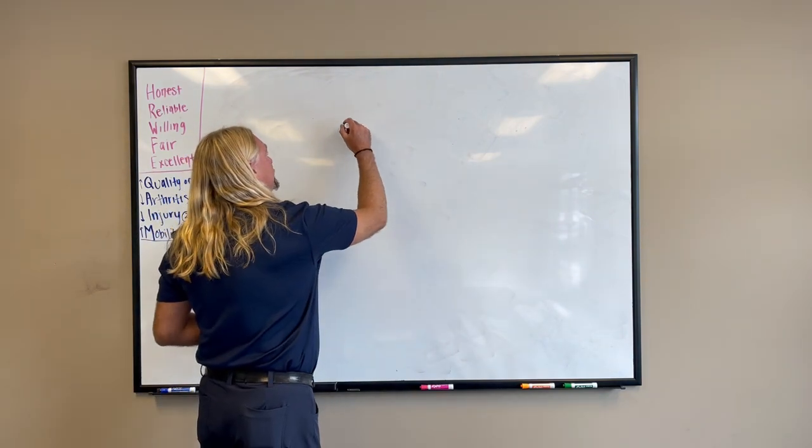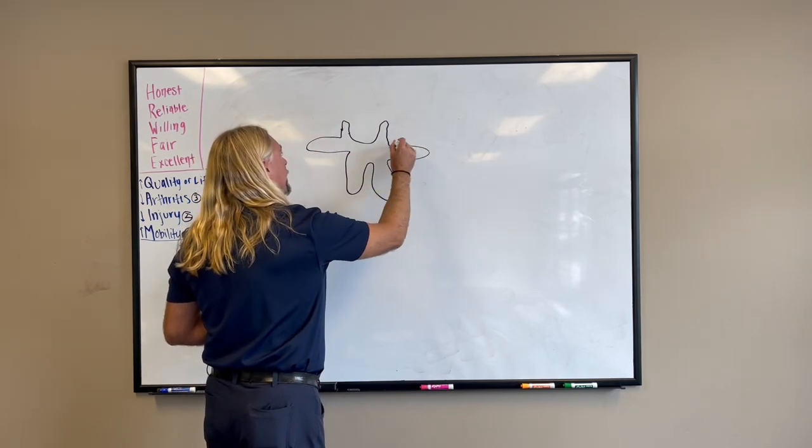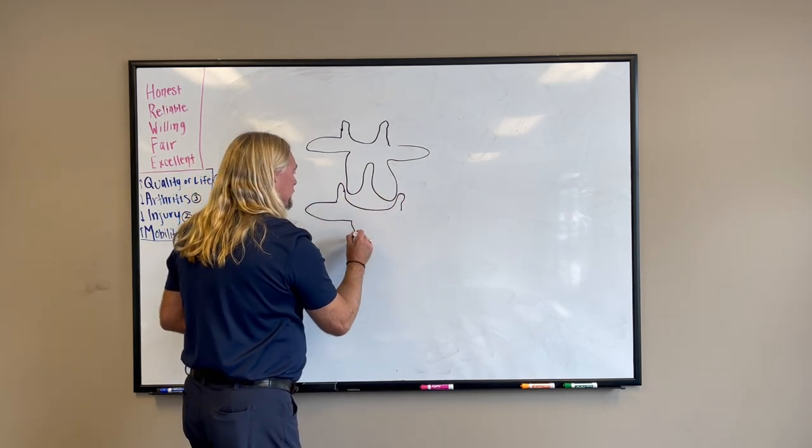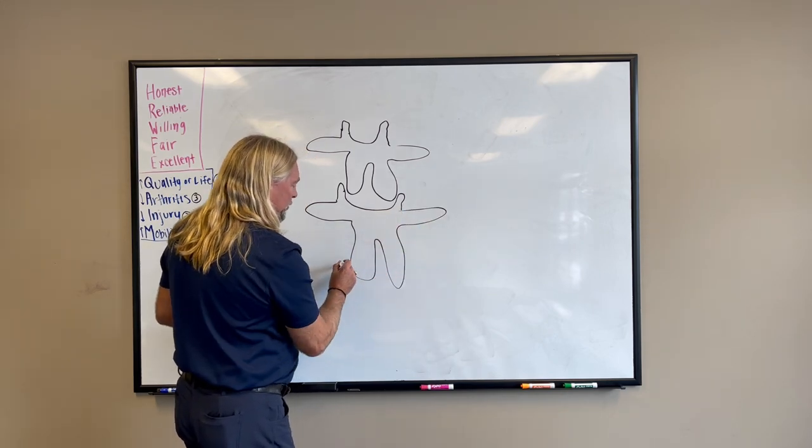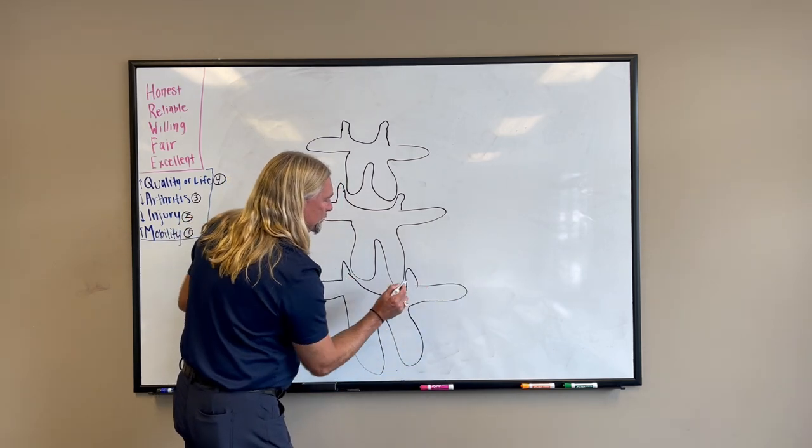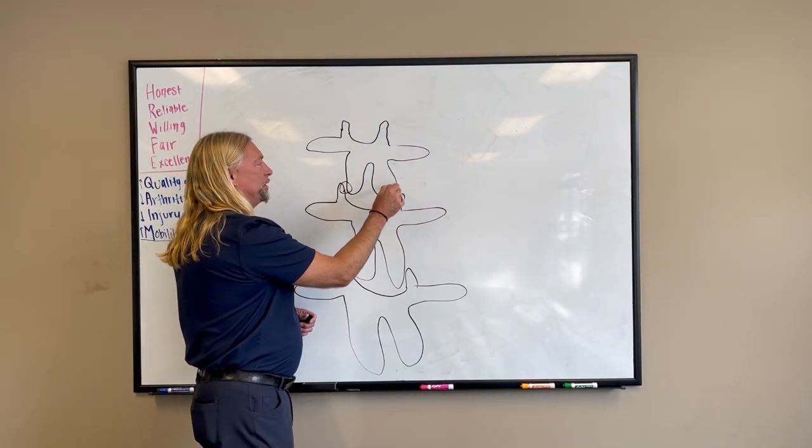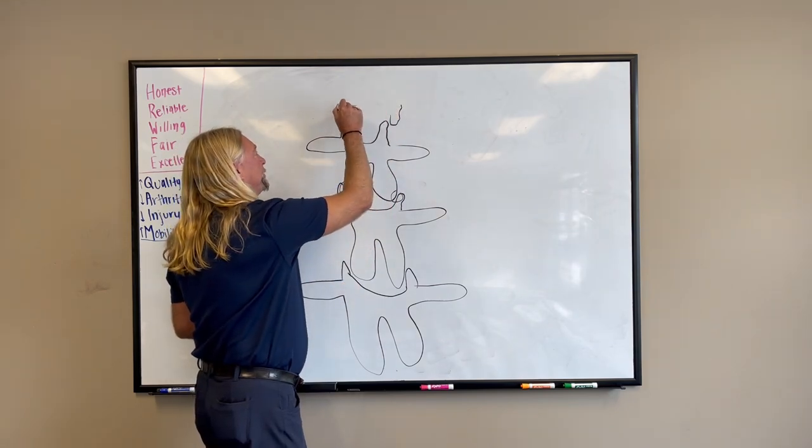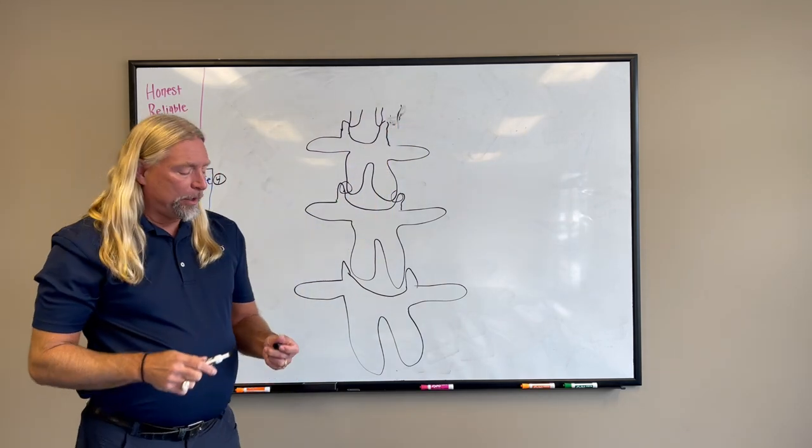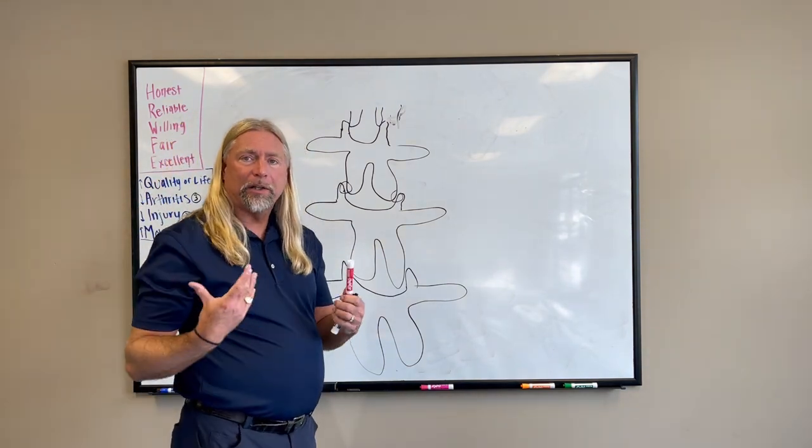Vertebrae, right? Another vertebrae. Forgive my artwork, but so you have the facet joints are here. These are the facet joints. You'd have another one here. And that's where the two vertebrae come together. Now, one of the things you have around the facet joints that a lot of times people forget about.